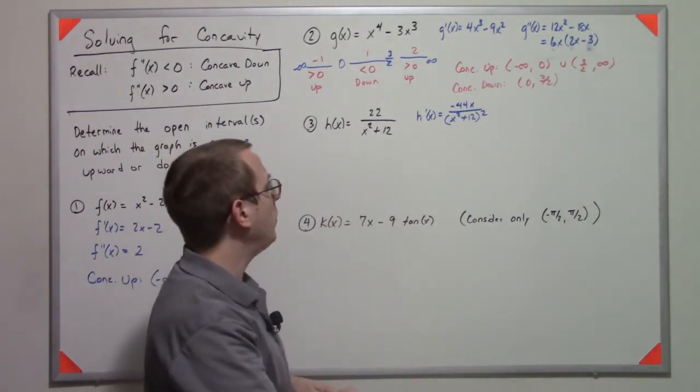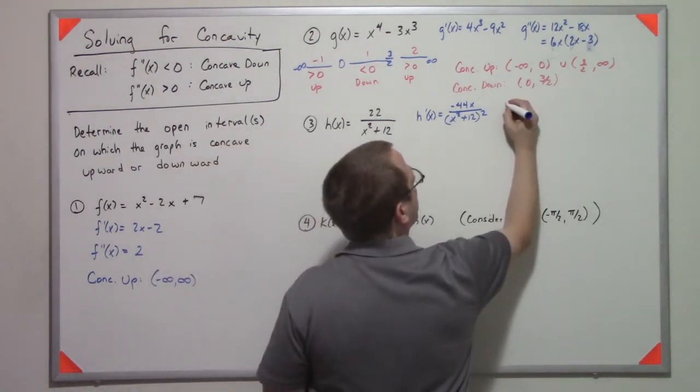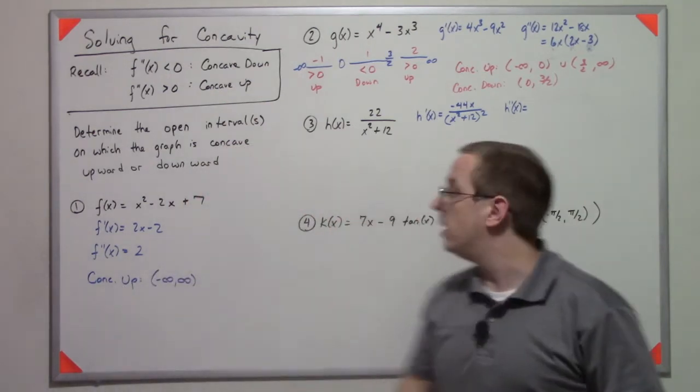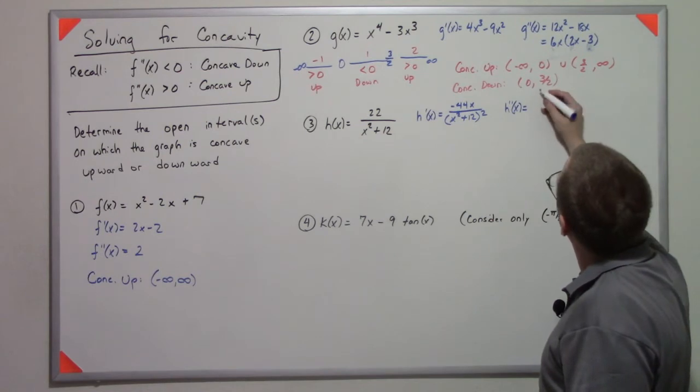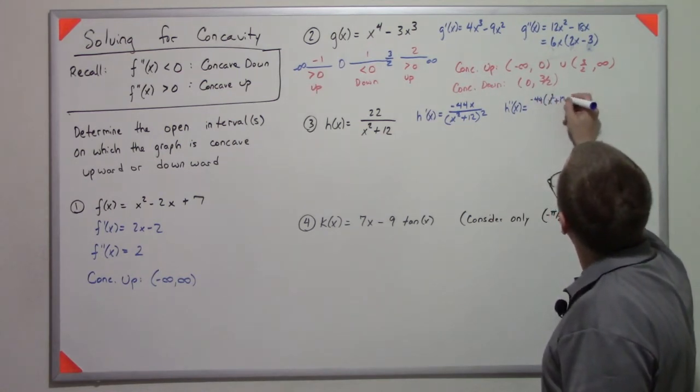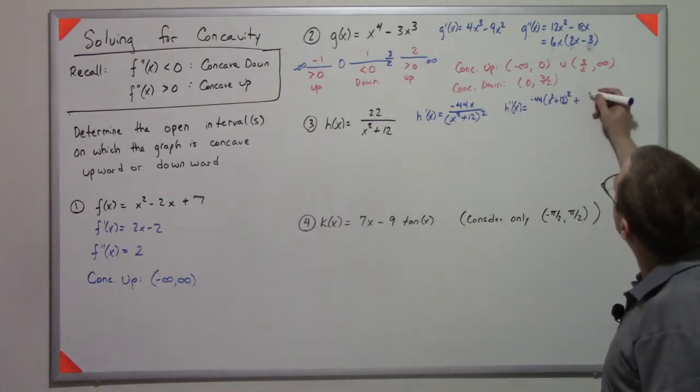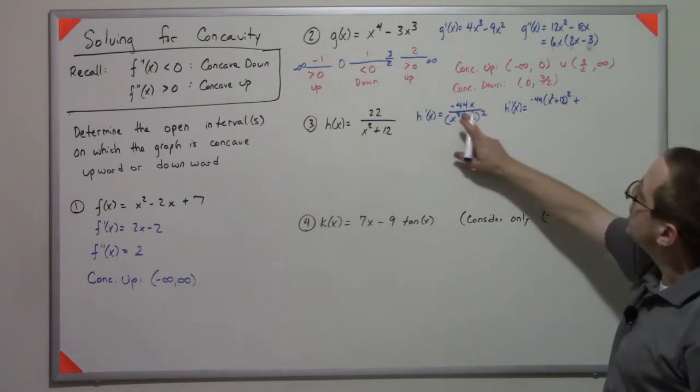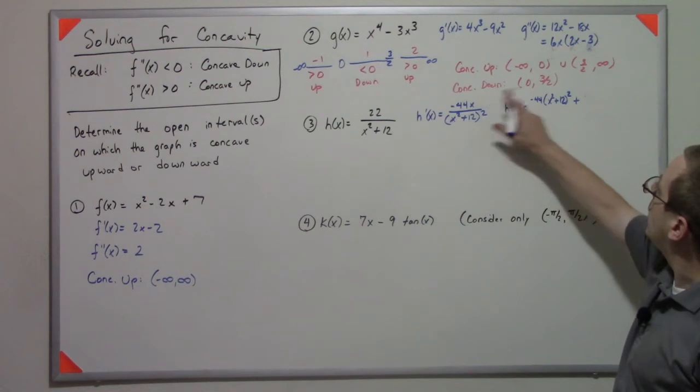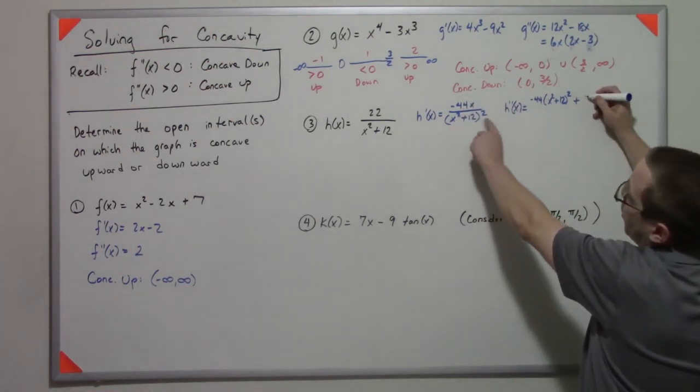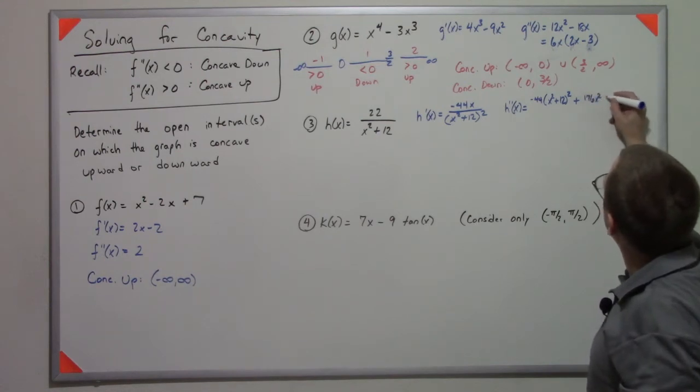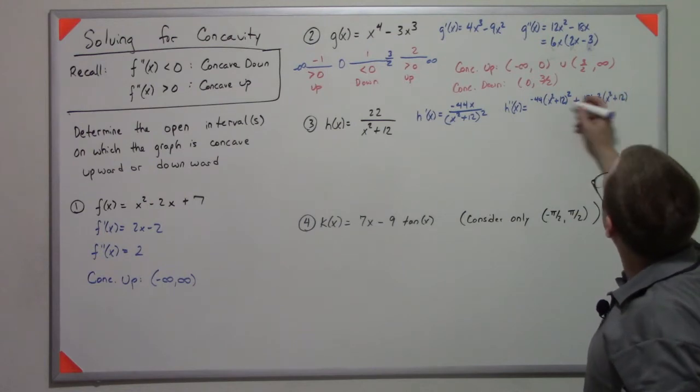Now I can do the same thing here and take the double derivative. It's going to be a little more complicated. We're going to have to use a quotient rule here. It's going to be a little difficult to do in my head. So we're going to do negative 44 x squared plus 12 squared plus 8. So let's see... low d high minus high, which is 44x, d low. You end up bringing down the 2 and getting a 2x. So you end up multiplying by 4. So you have 176x squared, x squared plus 12, all over x squared plus 12 to the 4th.